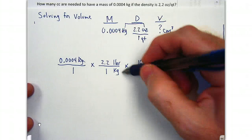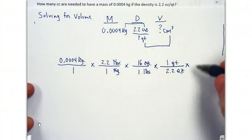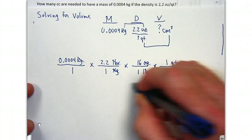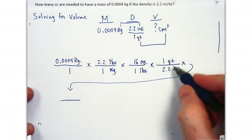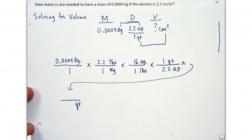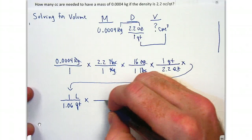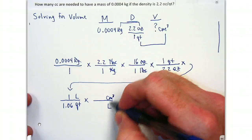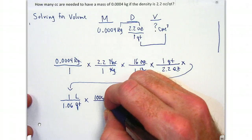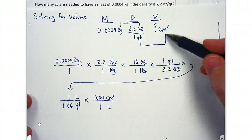Kilograms cancel, pounds cancel, ounces cancel, and we're at quarts. Now we need to get from quarts to cubic centimeters. We go from quarts to liters: 1.06 quarts for every one liter. Then liters to cubic centimeters — a cubic centimeter is the same as a milliliter, so there are 1,000 cubic centimeters in one liter. Now we've gone from quarts to cubic centimeters.